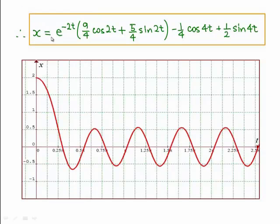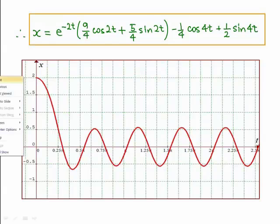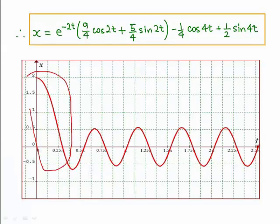So in other words, we have found the solution to this problem. And we know that it consists of a portion which has a negative exponential attached to it, and another portion which has a cosine 4t and a sin 4t. Now we sketch the graph of the solution. This is how the graph will look like. And it turns out that the first part of the graph, because of the negative exponential, it comes down and it eventually dies off.